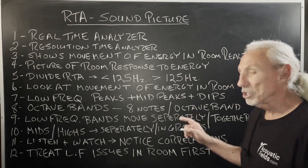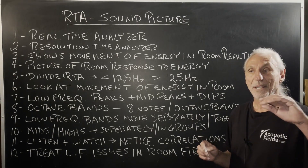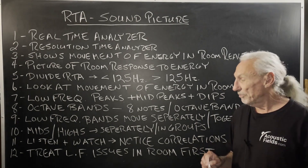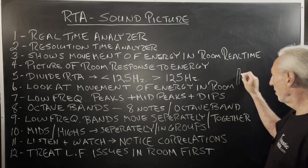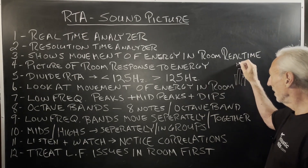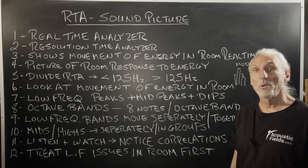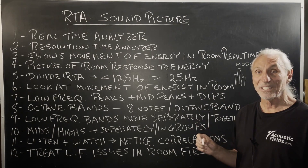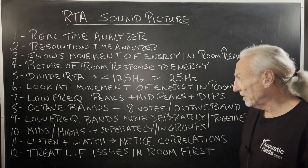Low frequency bands should move separately from each other. If they're moving in a group, that tells you that you've got a lot of modal issues in the room. Also, if you see a peak that hovers below the rest of them constantly, that's a mode. So you can get a good idea of which octave bands are producing modal issues in the room. It's a picture of the energy that you can't see, that you can only hear — that's the interesting thing about it.